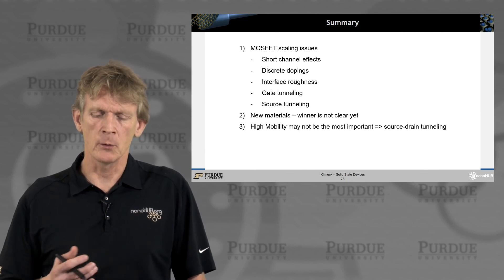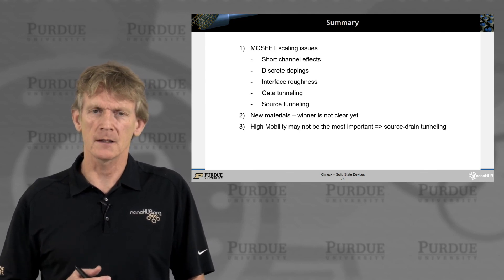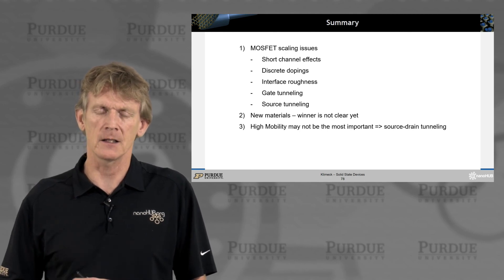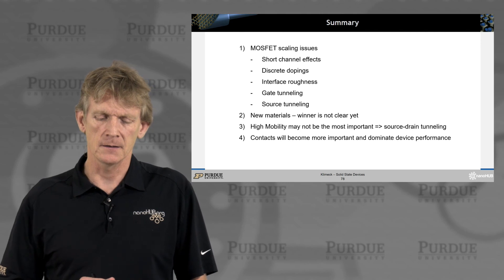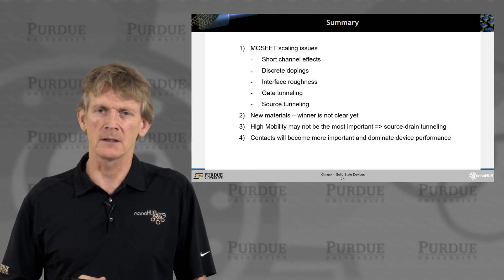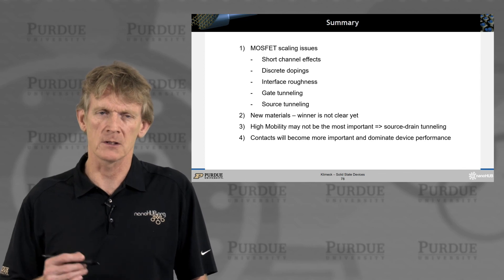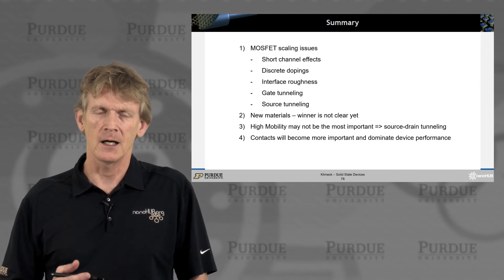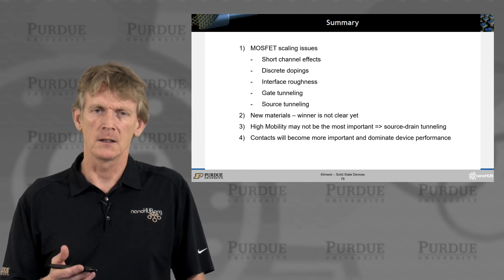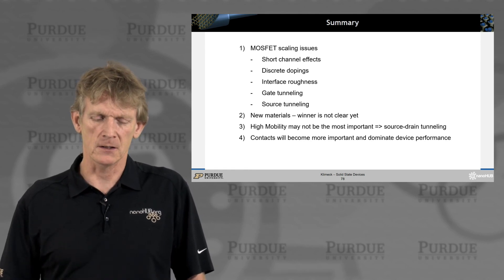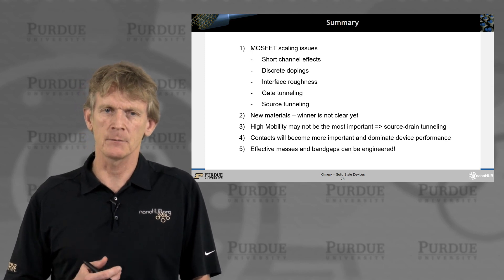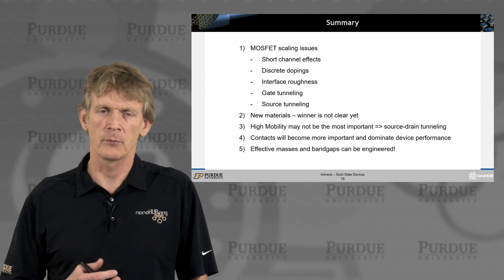So high mobility may not be the most important thing because you have the source drain tunneling. You want to have a barrier that prevents electron flow. And the context will become more and more important and begin to dominate the device performance. I haven't spent much time talking about that, but it's really how do you get the electrons into the transistor, into the source, to then be modulated is actually a big challenge as well. And effective mass and band gaps can be engineered. They're not just bulk properties anymore.